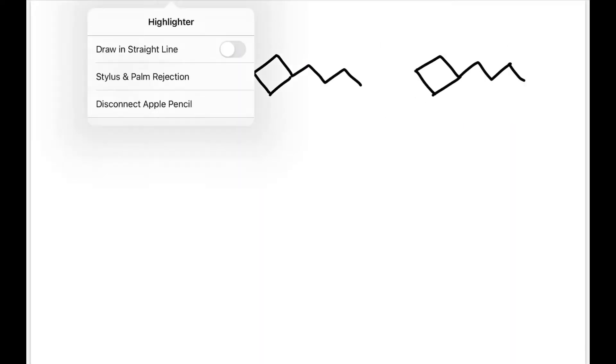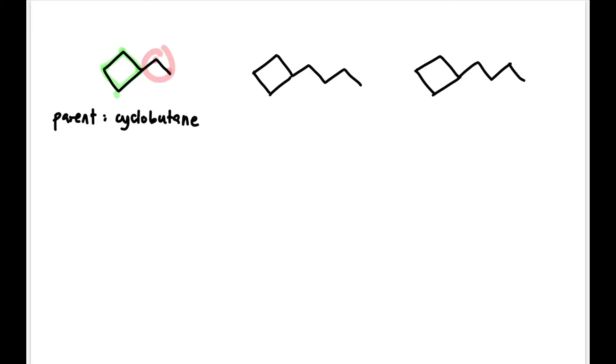Next, let's see what happens when there's both cyclo and a branch. We prioritize whichever has more carbons as the parent. In this case the parent is cyclobutane with four carbons. It has two carbons as ethyl, so the full name is ethyl cyclobutane. No number is needed since there's only one substituent.